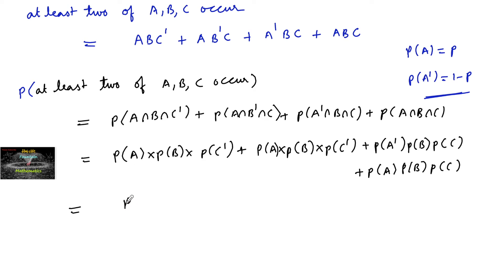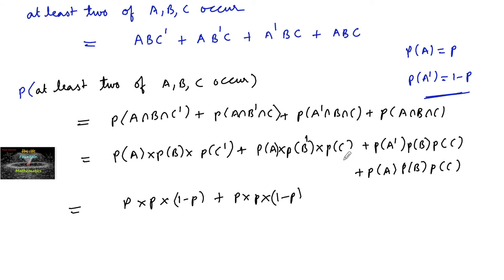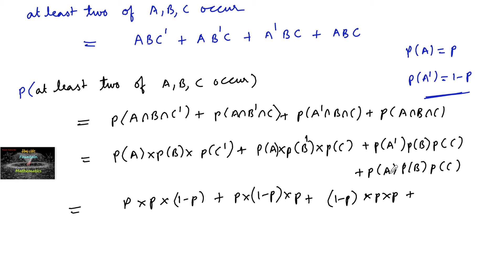Substituting P(A) = P(B) = P(C) = P and the complements equal to 1−P, each of the three 'exactly 2' terms becomes P·P·(1−P) = P²(1−P). So the total is 3P²(1−P) + P³, which expands to 3P² − 3P³ + P³.